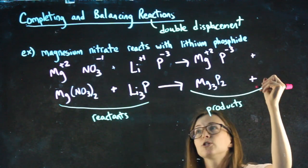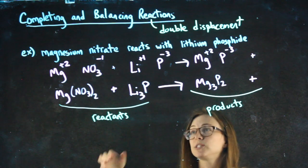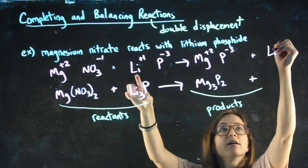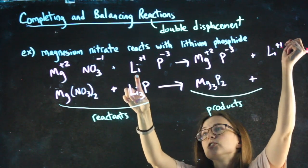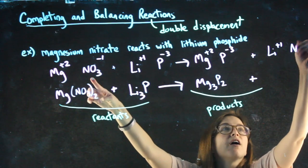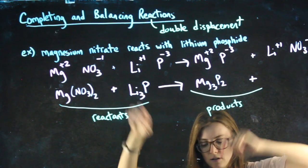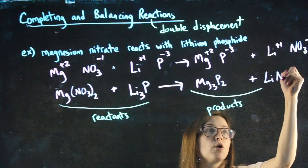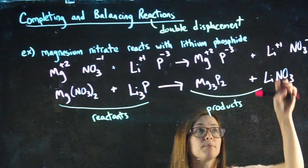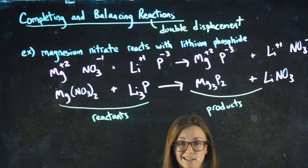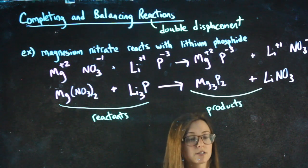Then I have to also add whatever else I haven't used yet. The other positive ion, writing the positive one first, with the other negative ion, and re-crisscrossing. I no longer need parentheses for the nitrate, because I didn't have to give it an additional subscript when I crisscrossed.